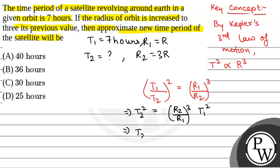So, we will have T2 squared is equal to 3R by R whole cubed into 7. This will be equal to 3 cubed into 7.